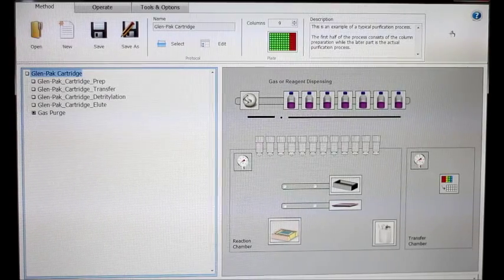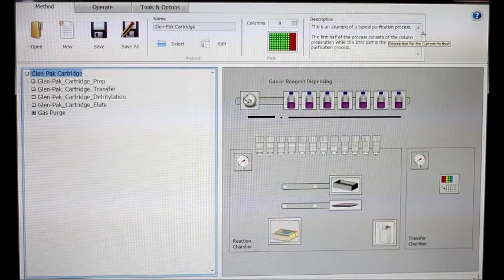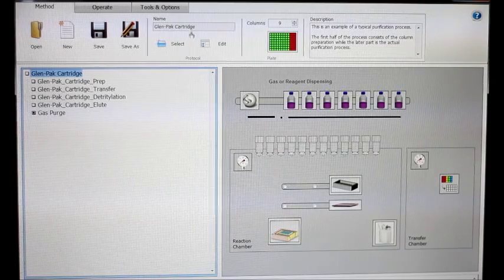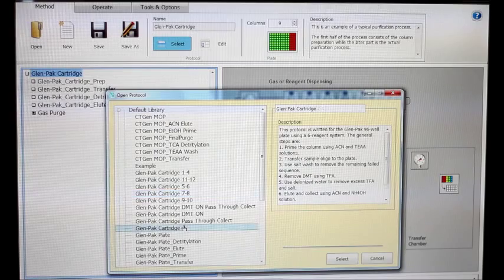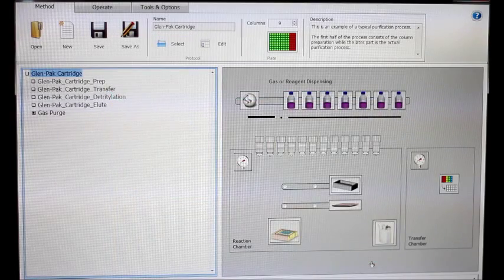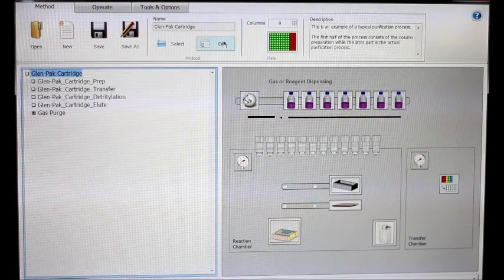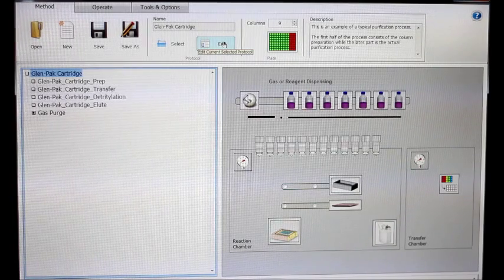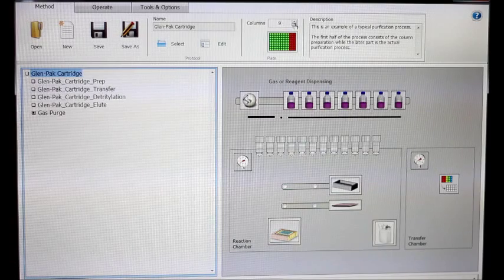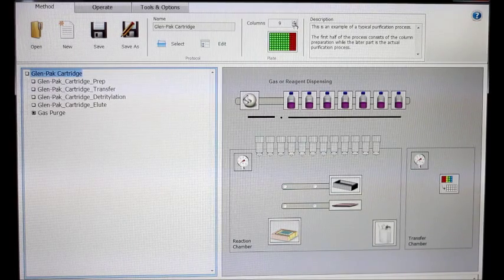The top main toolbar is where you select the protocol you want to run along with the number of columns. To select a protocol, first click the select protocol tab. Select the protocol you want to run from the drop-down menu and hit OK. You can also edit an existing protocol or add a new protocol using the edit protocol tab. The column field is where you select the number of columns that you want to run for your given process.